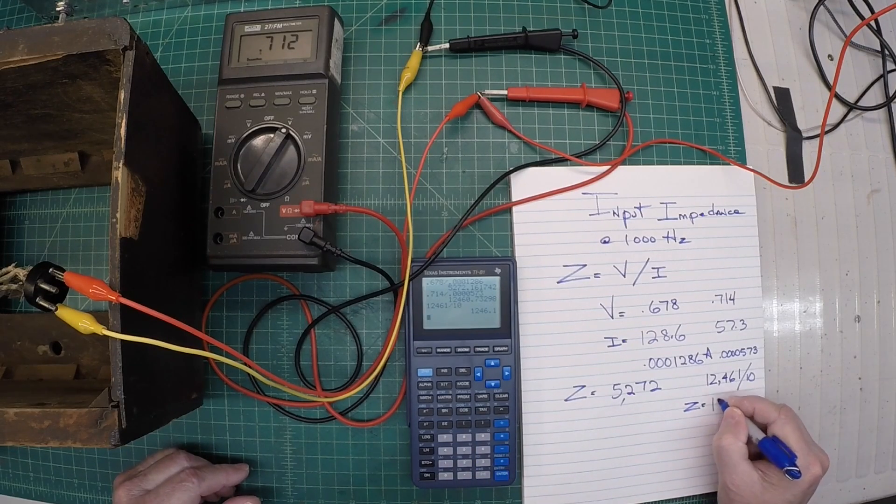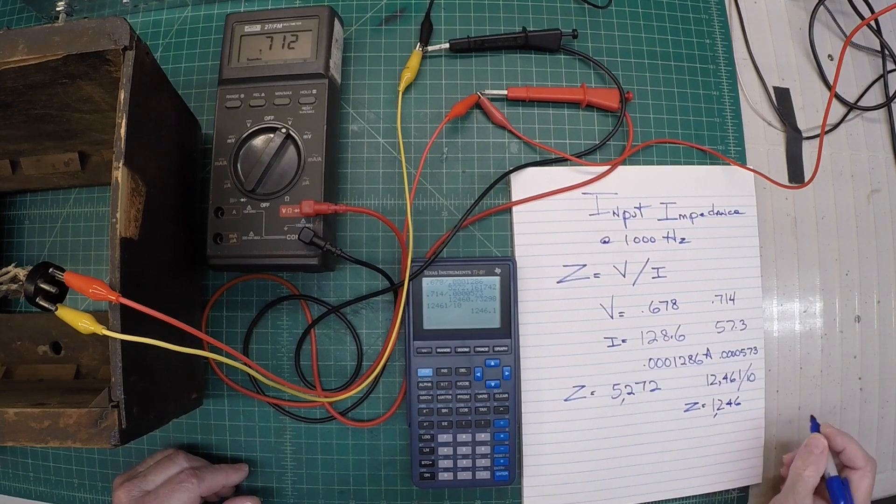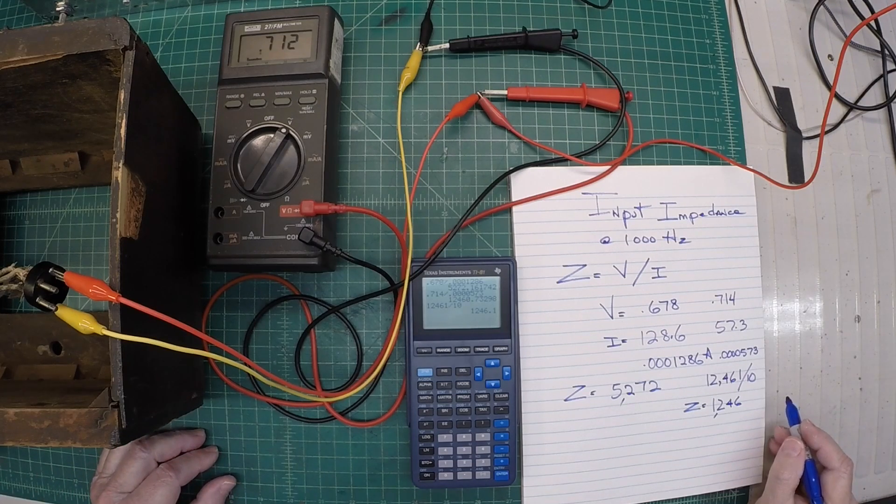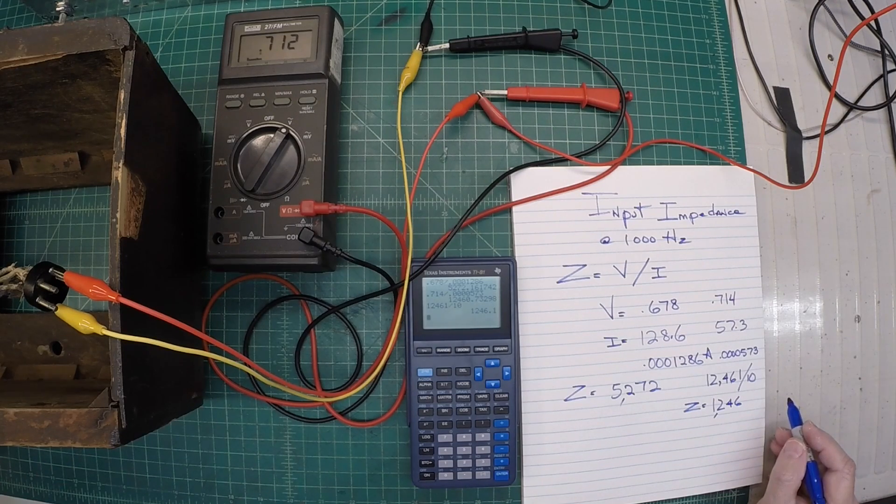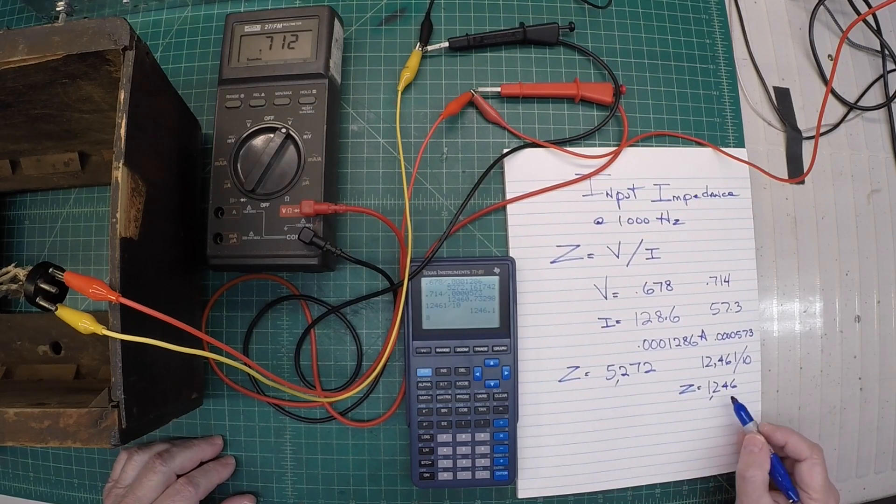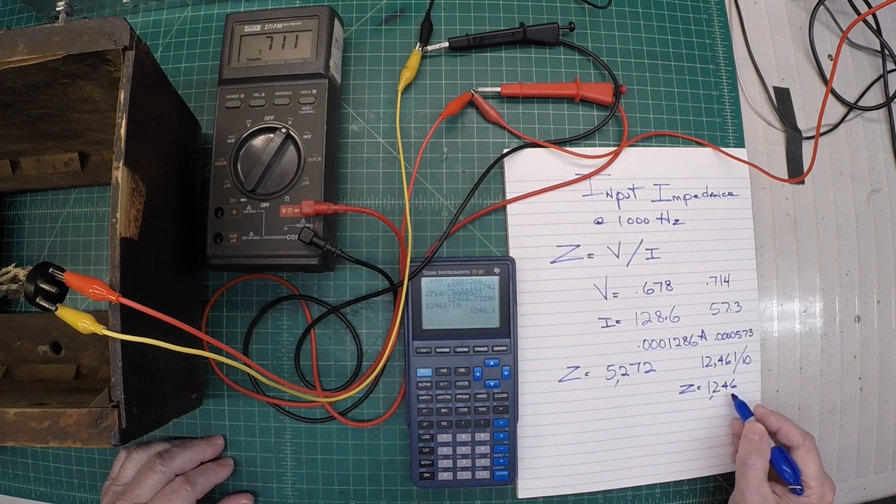And the impedance ratio will be this number. So we can just take the 12,461, divide by 10. And of course, that comes out to be 1,246. That will be our input ratio itself for the transformer, output transformer.